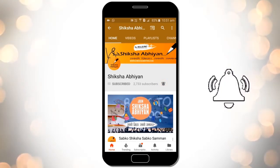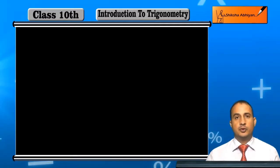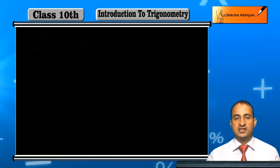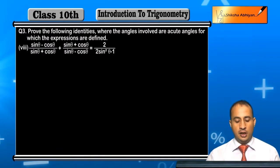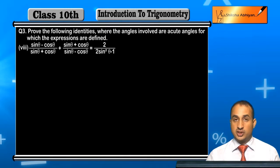Now student, we will prove the last part of question 3, that is the part which is sine theta minus cos theta upon sine theta plus cos theta plus sine theta plus cos theta upon sine theta minus cos theta.